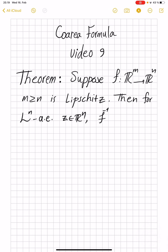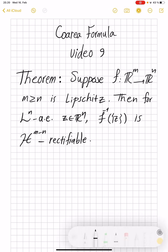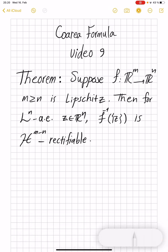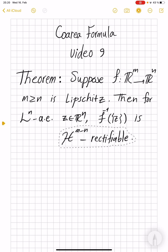The preimage, f inverse of the singleton z, is H^{m-n} rectifiable. Maybe, well, just to be a little bit more precise, I should say countably rectifiable. The terminology is not universal here.